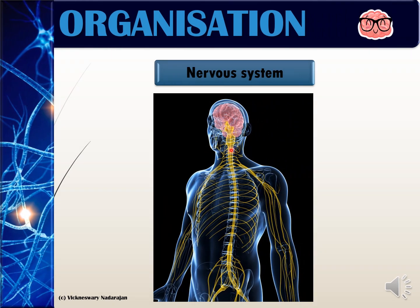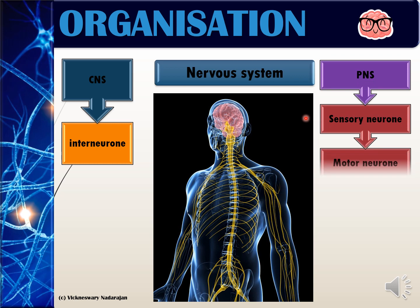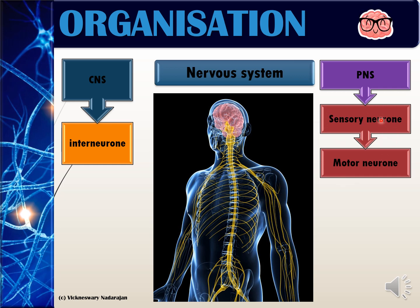The nervous system is made up of nerve cells called neurons. The central nervous system is mainly made up of interneurons, while the peripheral nervous system contains both sensory neurons and motor neurons. Sensory neurons are also known as afferent neurons, while motor neurons are known as efferent neurons.